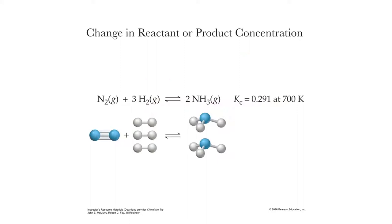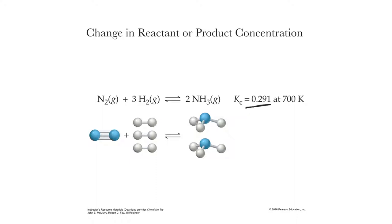Here's our example we're going to use. This is the Haber process — nitrogen plus hydrogen gas yields ammonia. K sub C, its equilibrium constant, is 0.291 at a certain temperature. So I'm going to have nitrogen gas with a triple bond, three hydrogen molecules yielding two moles of ammonia. All three are gases, by the way.